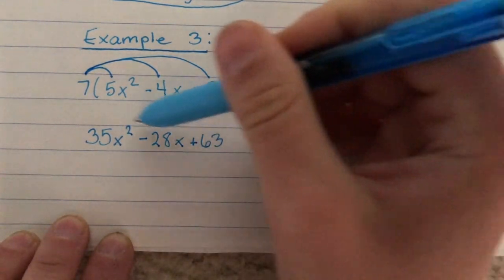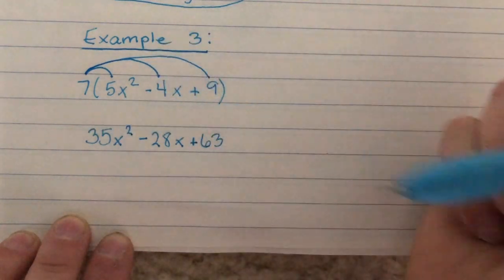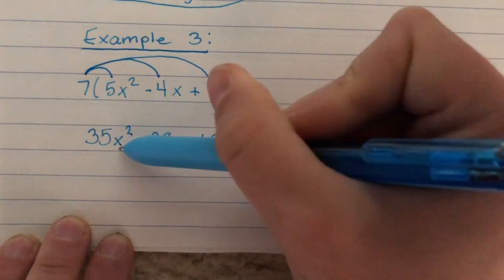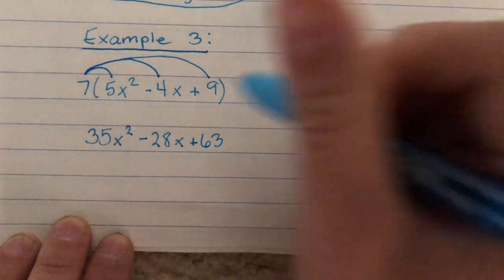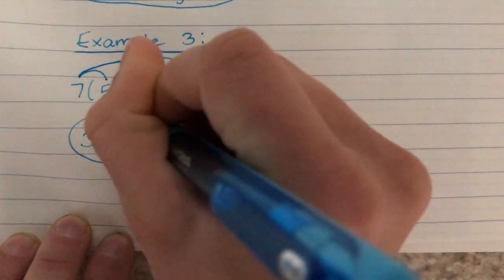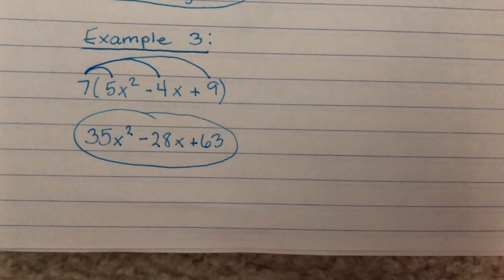Sometimes it's a good idea to go back and check and make sure we can't combine any terms here to make sure we're fully simplified. But I know that an x squared and an x are different terms, and they cannot be combined together. So, at this point, we do have our expression in simplest form.